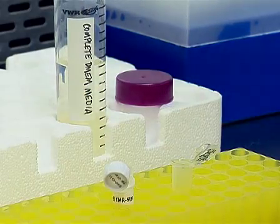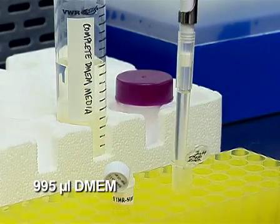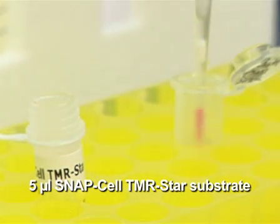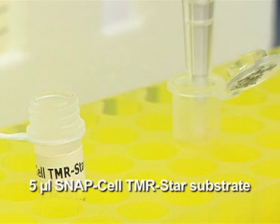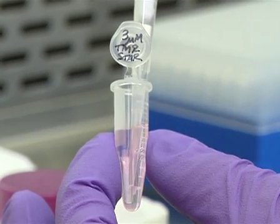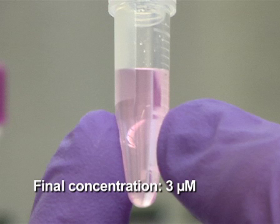Mix dilabeling media by adding 995 microliters of complete DMEM and 5 microliters of 0.6 millimolar SNAPCELL TMR-star substrate. Pipet up and down several times to mix after the addition of substrate. The final concentration of SNAPCELL TMR-star should be 3 micromolar.